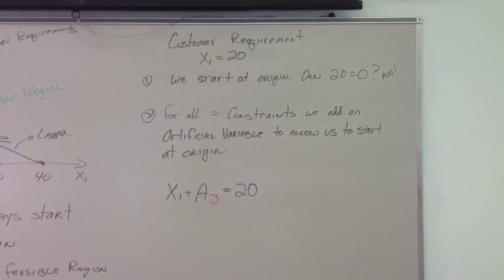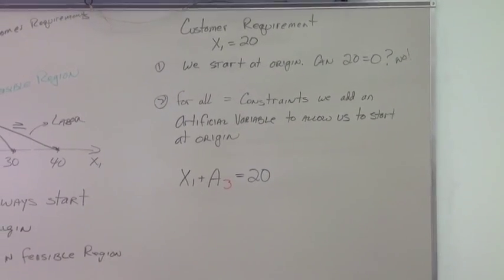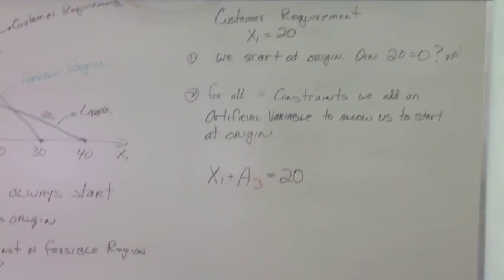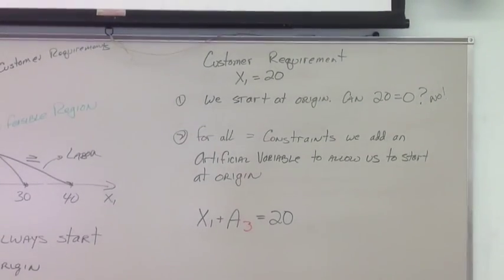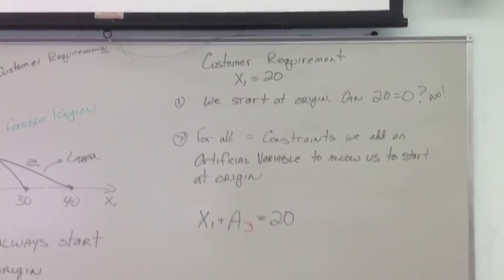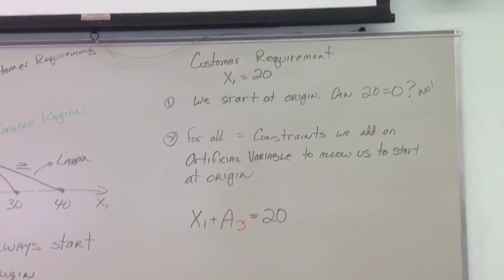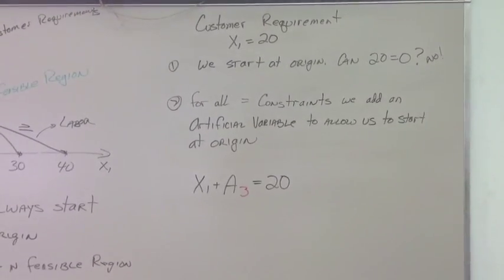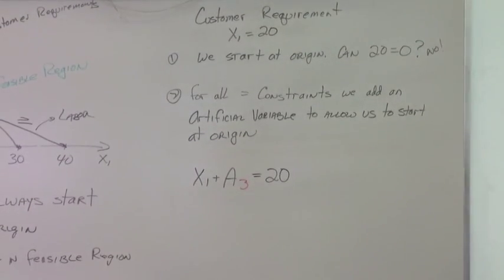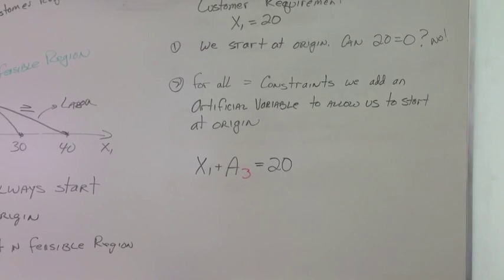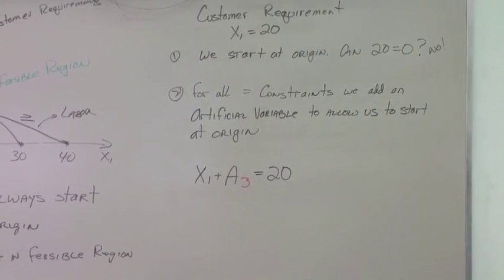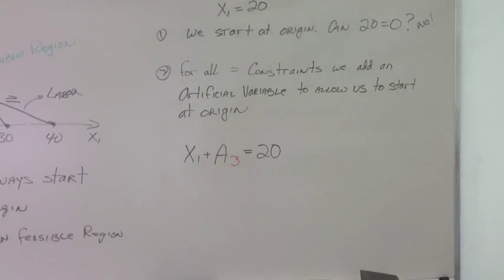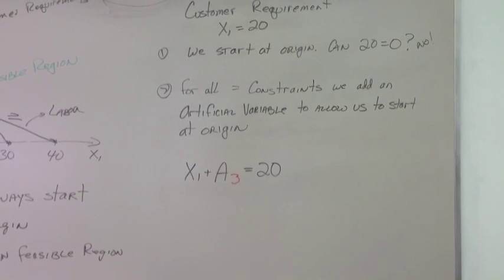Now I'm going to look at our third constraint: the customer requirement x1 = 20. We have our intercept there, which is fine, but the problem mathematically is that we're starting at the origin, which is 0,0 — so 20 cannot equal 0. So for all constraints with an equal to, we add an artificial variable. This allows us to start at the origin; once we move that constraint away from the origin, which you'll see later, the artificial variable goes away. It's really only there to mathematically allow us to start at 0,0. The equation becomes: x1 + a3 = 20. Here 'a' is the artificial variable, and subscript 3 because it was the third constraint.